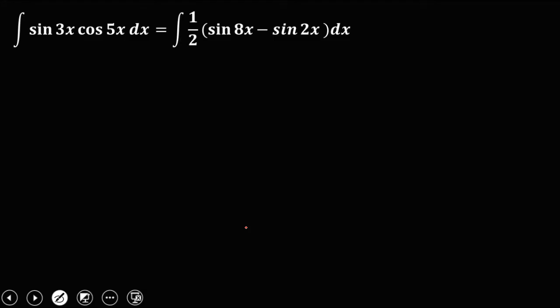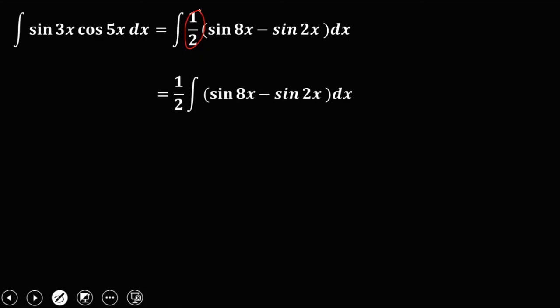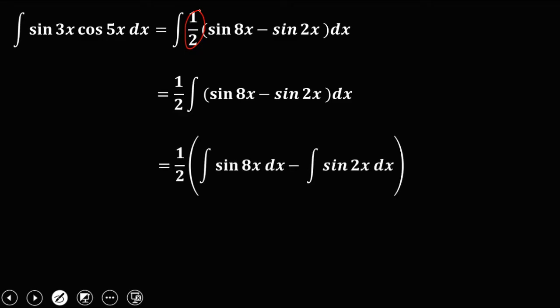Therefore, sine 3x cosine 5x equals 1 half (sine 8x minus sine 2x). Putting the constant outside, we have 1 half times the integral of (sine 8x minus sine 2x) dx. To integrate each term, recall that the integral of sine u is equal to negative cosine u over the derivative of u, plus C.